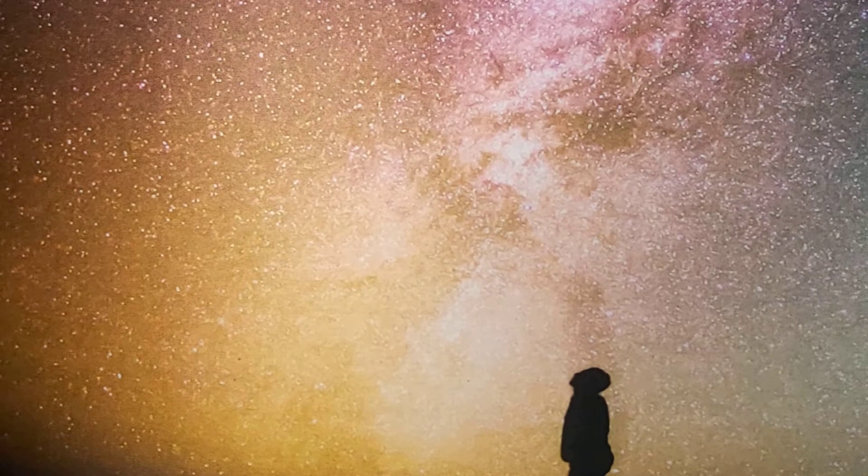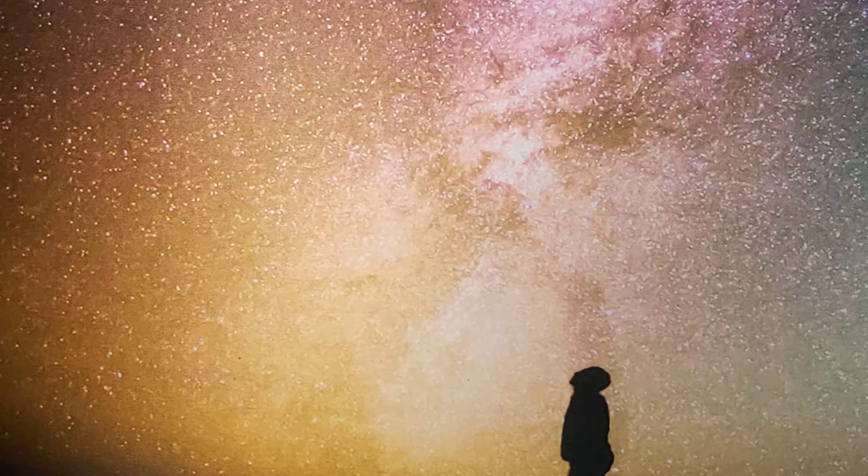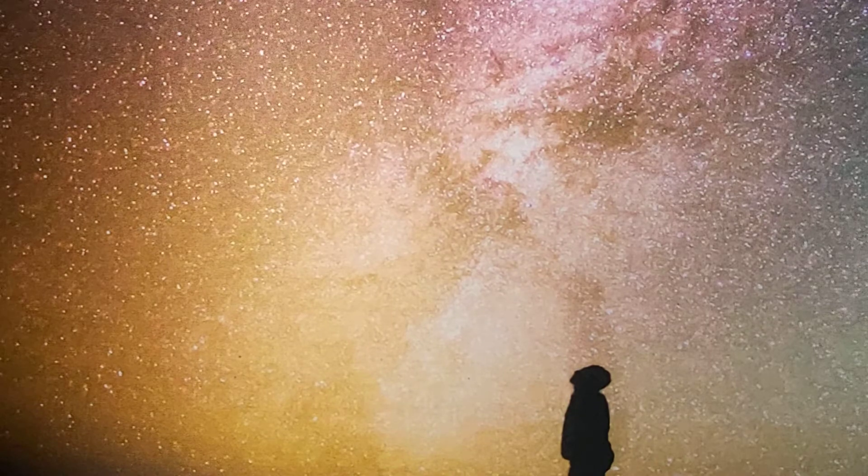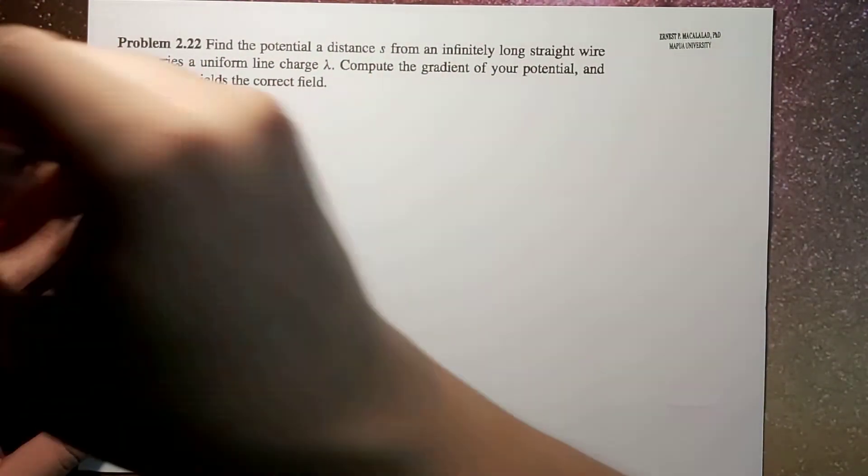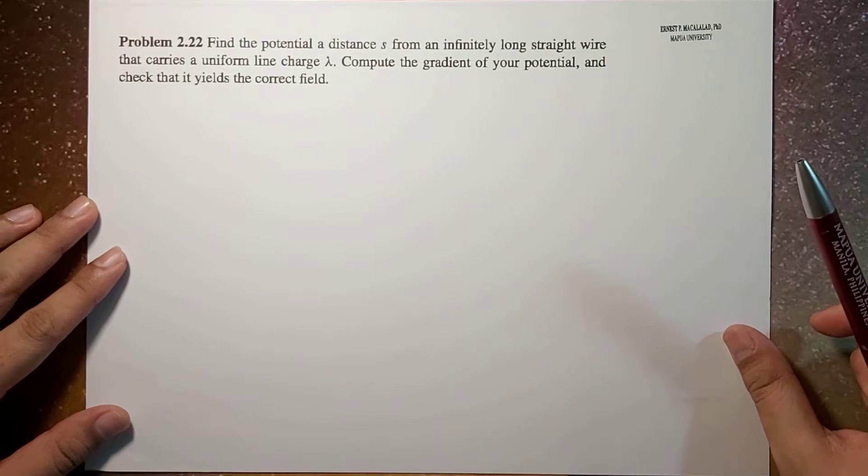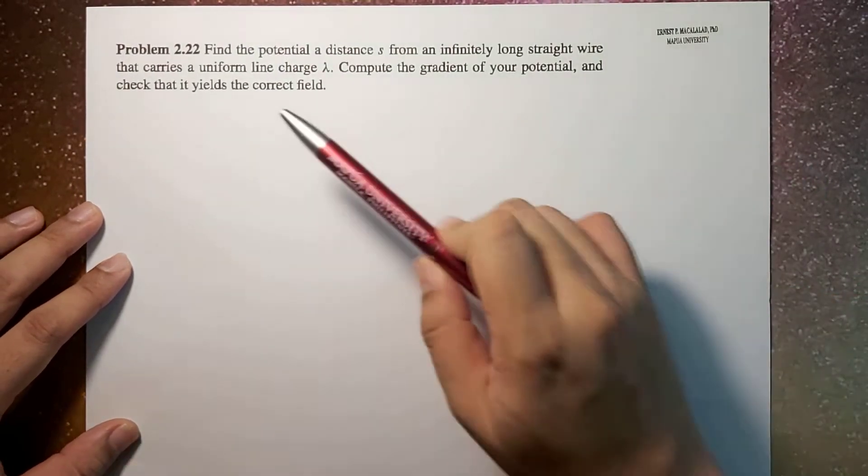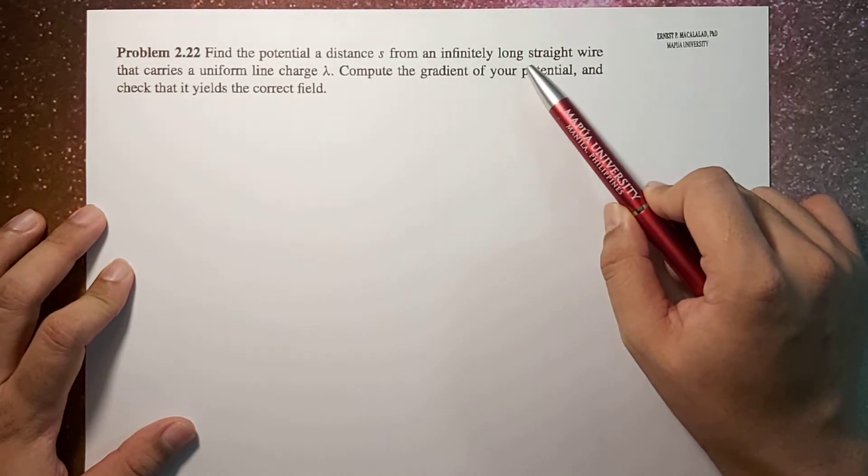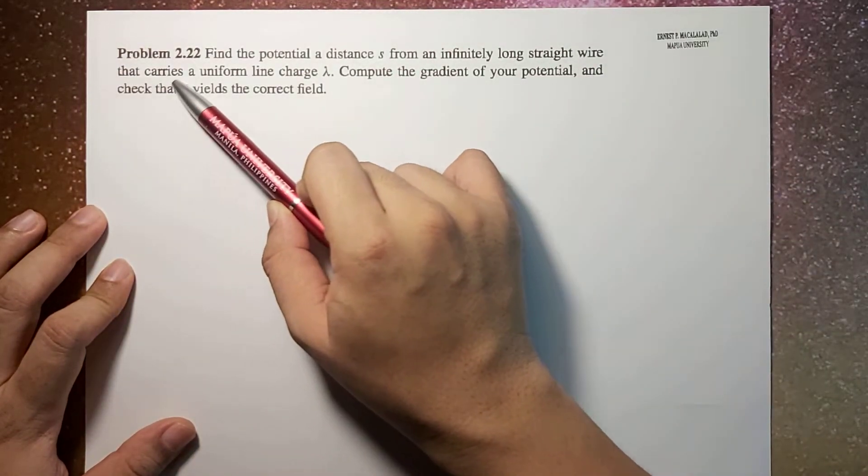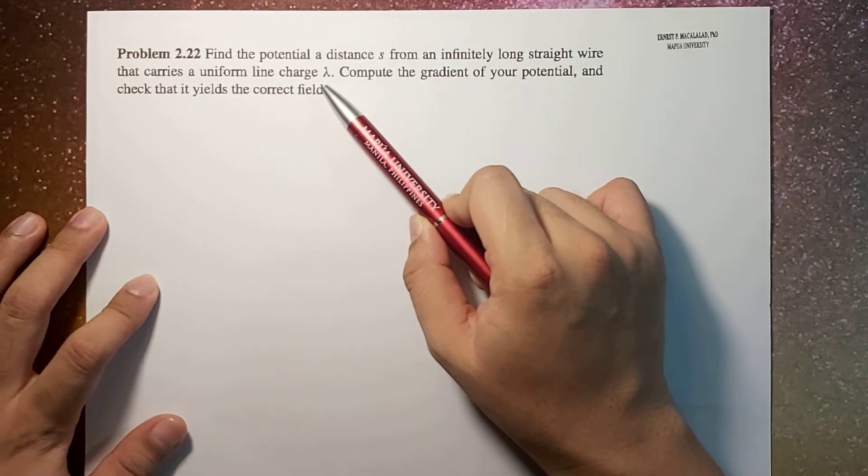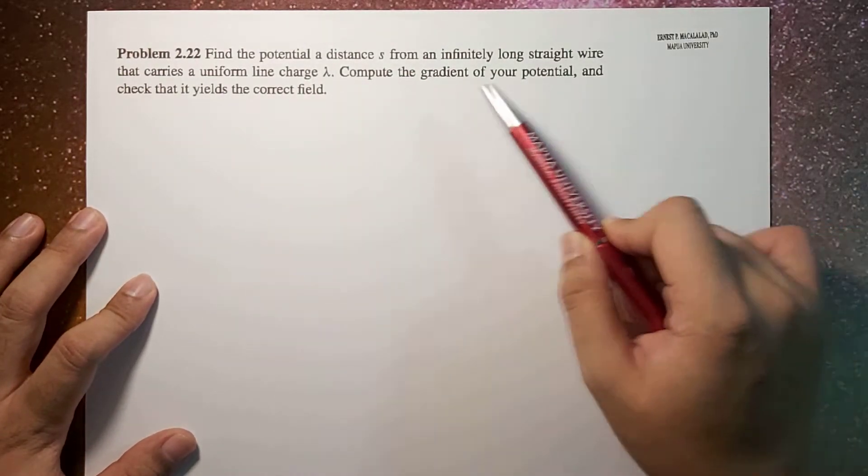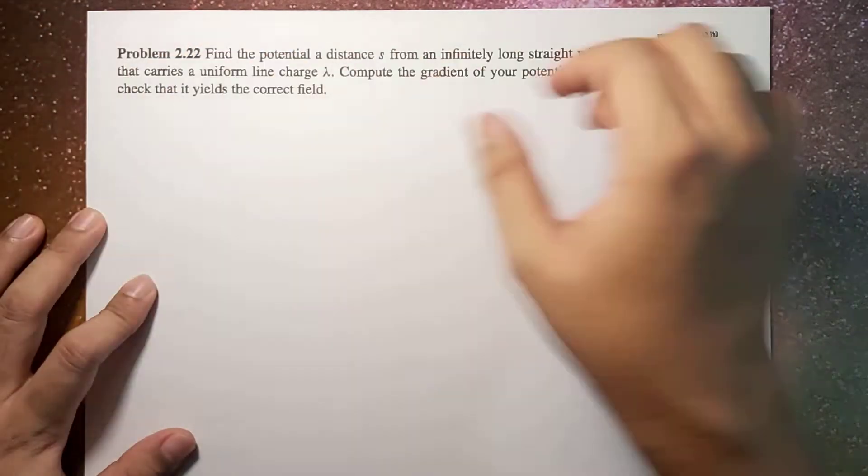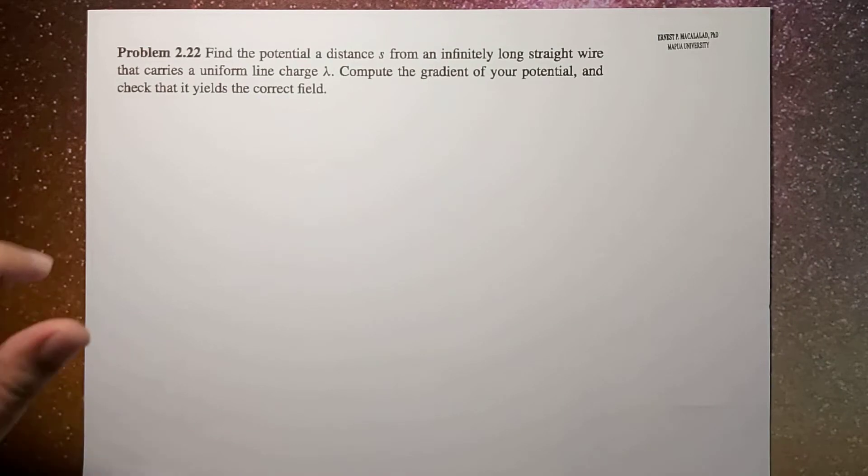What's up guys it's me Sir Ernest and today we're going to solve problem 2.22 of Griffith's fourth edition. The problem reads: find the potential a distance s from an infinitely long straight wire that carries a uniform line charge lambda. Compute the gradient of your potential and check that it yields the correct field.